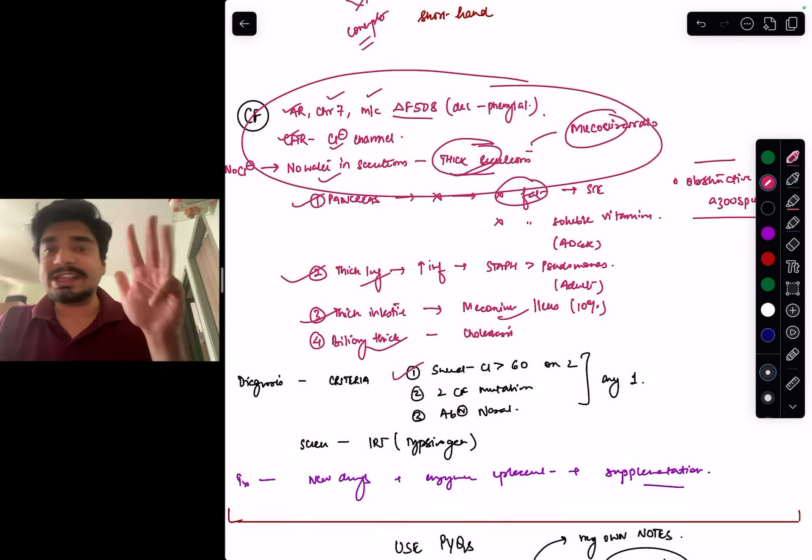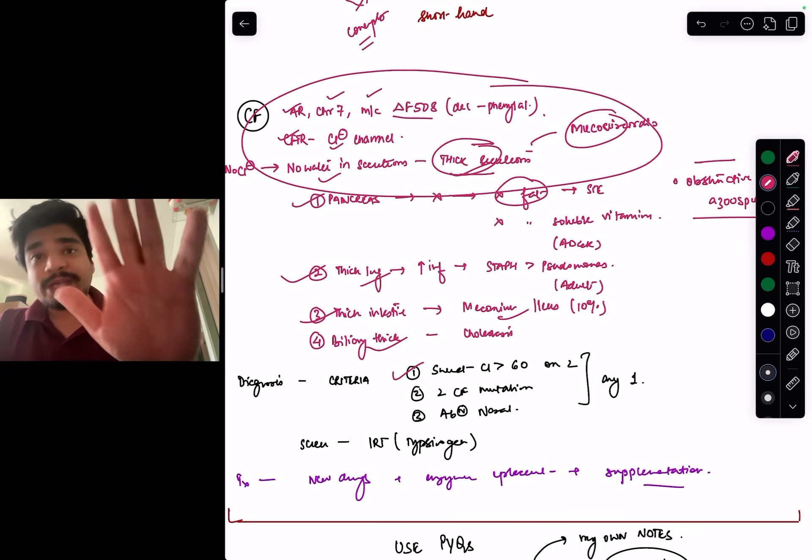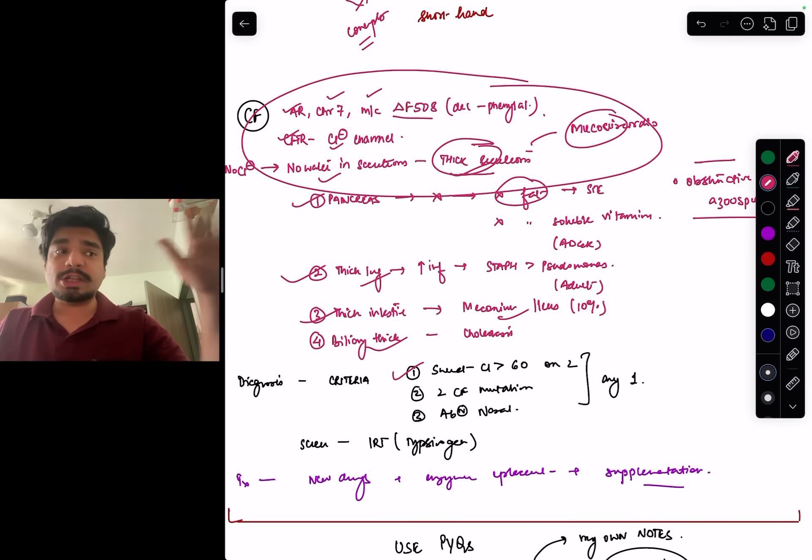Similarly, in the diagnostic criteria, sweat chloride more than 60 on 2, 2 CF mutation, abnormal nasal potential, any one. You don't need to do all the three. Just any one of this you can diagnose. Treatment is newer drugs along with pancreatic enzyme replacement and supplementation of deficient vitamins. So, in this way, you can concise everything in half page. Start doing it for ENT, Ophthal, PSM and FMT. At least these four subjects, when you are doing, when you are reading the main notes, watching the videos, reading the standard textbooks, simultaneously get into the habit of making concise notes.